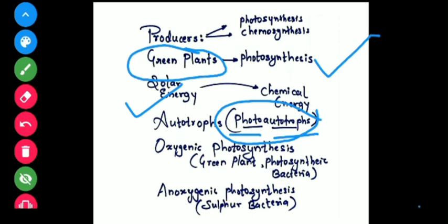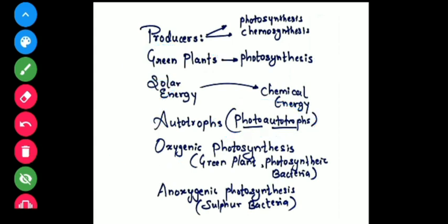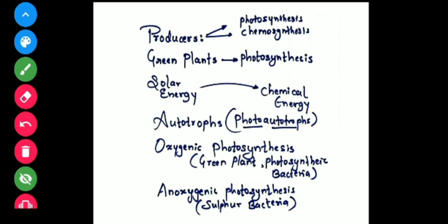In the reaction of photosynthesis, green plants require CO2, water, and sunlight. In the presence of the green pigment, they form carbohydrates and the byproduct is oxygen — so this process is called oxygenic photosynthesis. The examples of oxygenic photosynthetic organisms are green plants and photosynthetic bacteria. Certain organisms like sulfur bacteria can also do photosynthesis, but without releasing oxygen — those are called anoxygenic photosynthetic organisms.